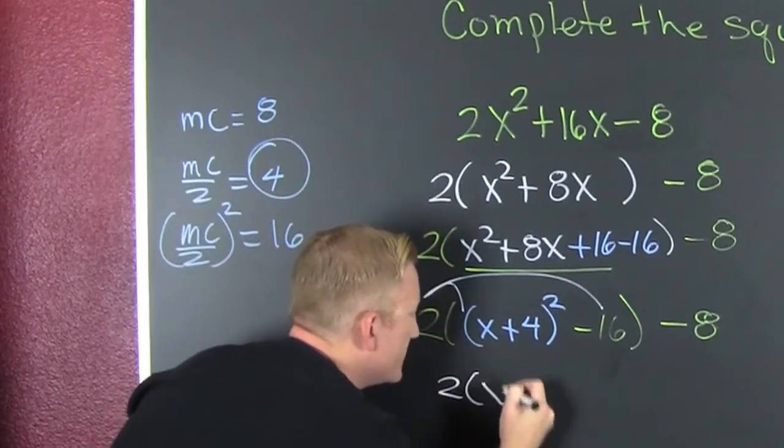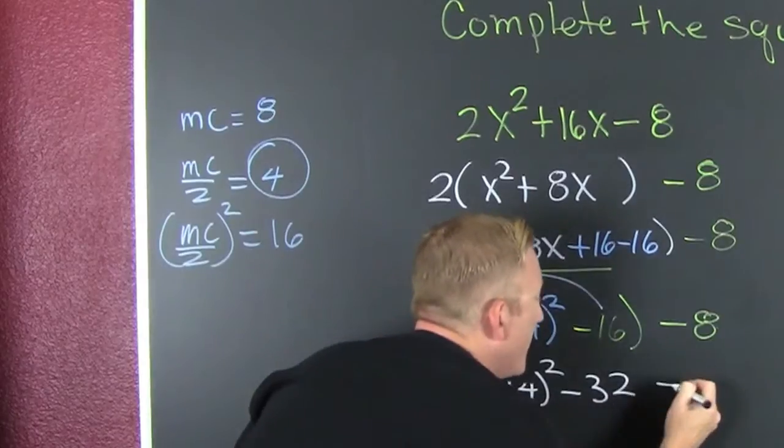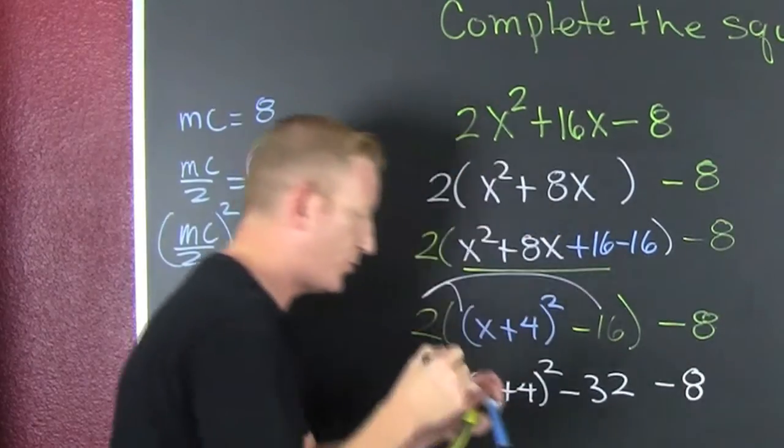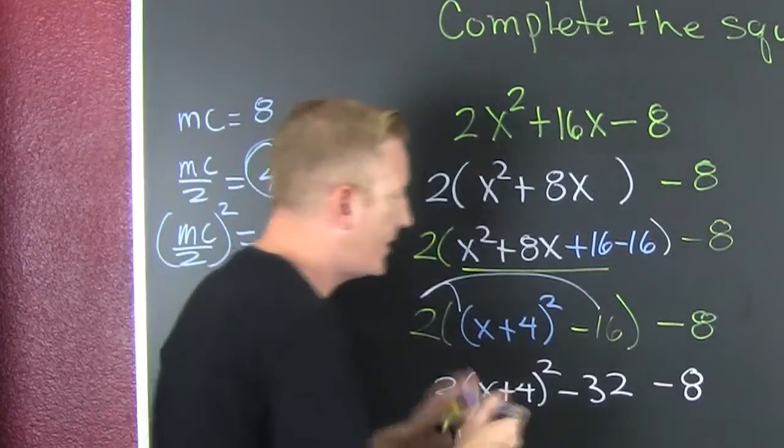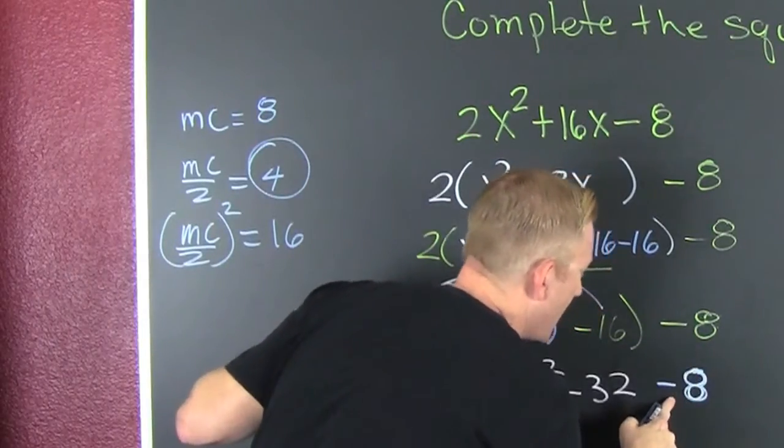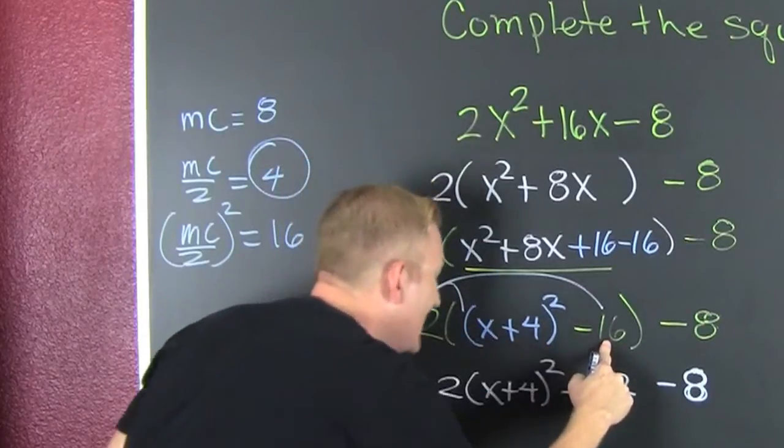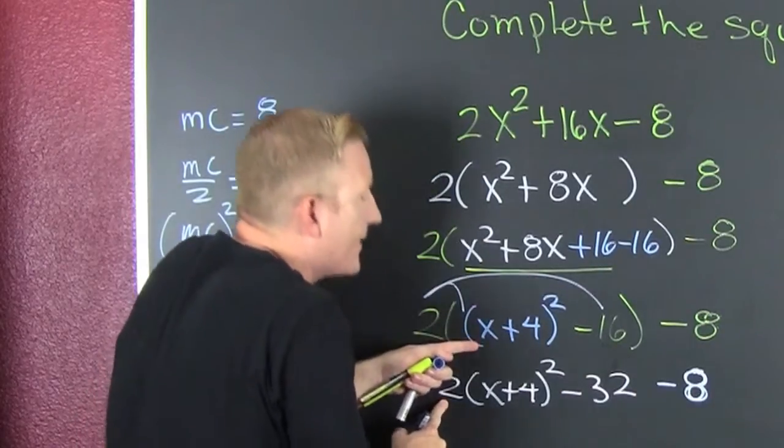So then that's a 2 times x plus 4 squared minus 32 minus 8. Great. That minus 8 is from the outside. That 32 is from the 2 times the 16. That 2 is from the 2 times that quantity.